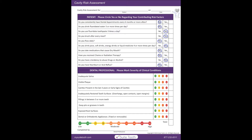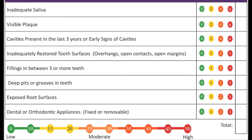In the next section, you can mark the severity of each clinical condition, or direct the patient to circle the color or number that applies. After these sections are complete,